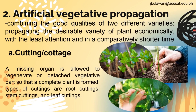For cuttings, the missing organ is allowed to regenerate on a detached vegetative part so that a complete plant is formed. Types of cuttings are root cuttings, stem cuttings, and leaf cuttings. You can cut them and replant.